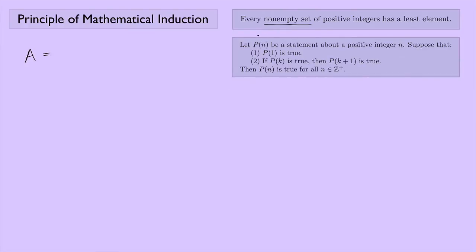I need to prove that P(n) is true for all positive integers n. There are two ways to do this: I could let A be the set of integers for which P(n) is true and try to show that we have all positive integers in that set. Or I could do the opposite — let A be the set of positive integers for which P(n) is not true and then get a contradiction. I'm going to try that approach.